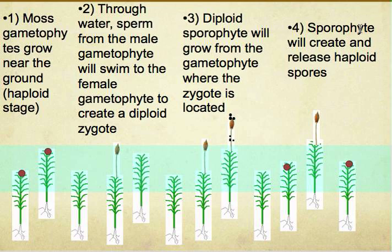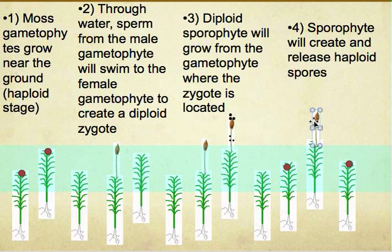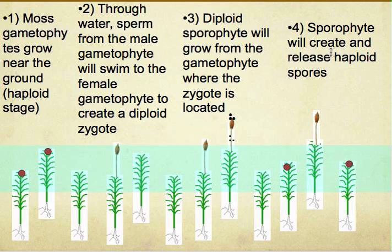The sporophyte will create and release haploid spores. As you can see the spores over here — this stalk-like structure — it's called the sporophyte because of its stalk-like structure.